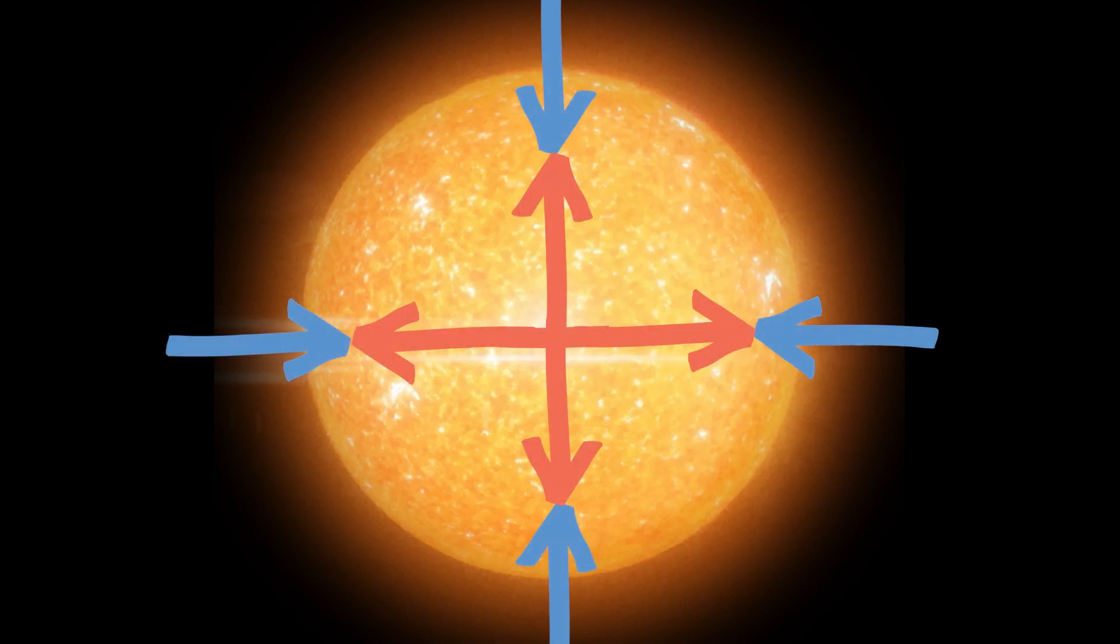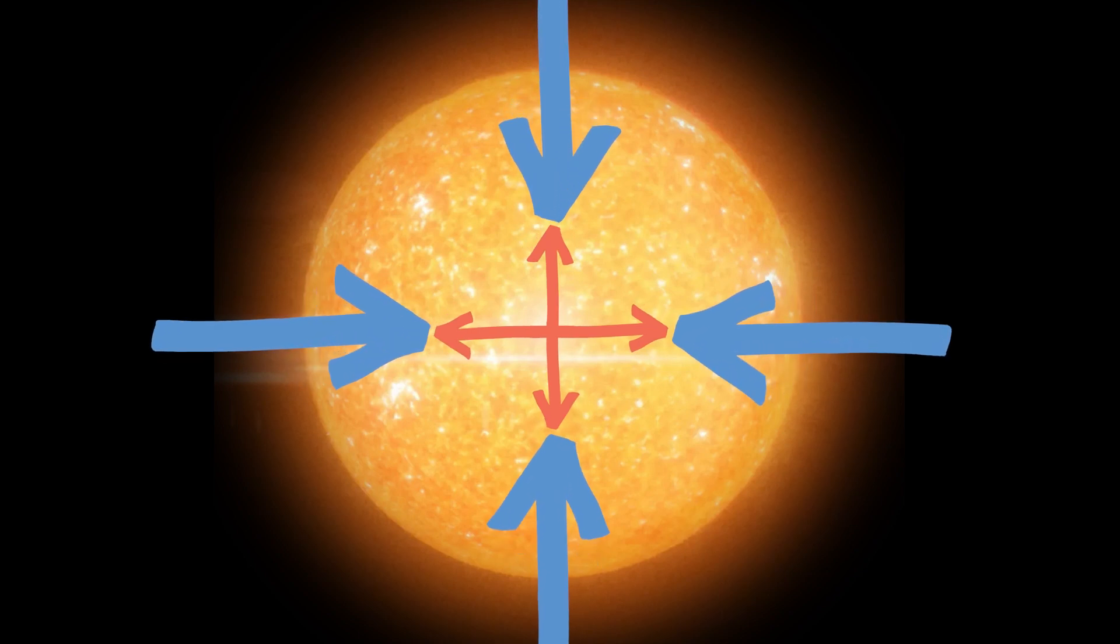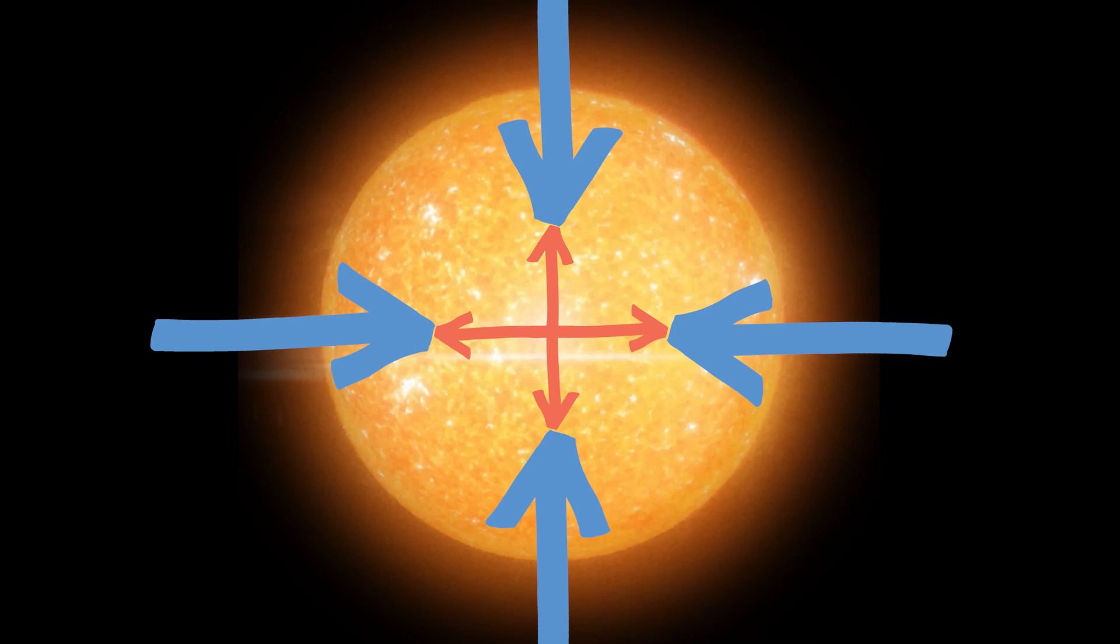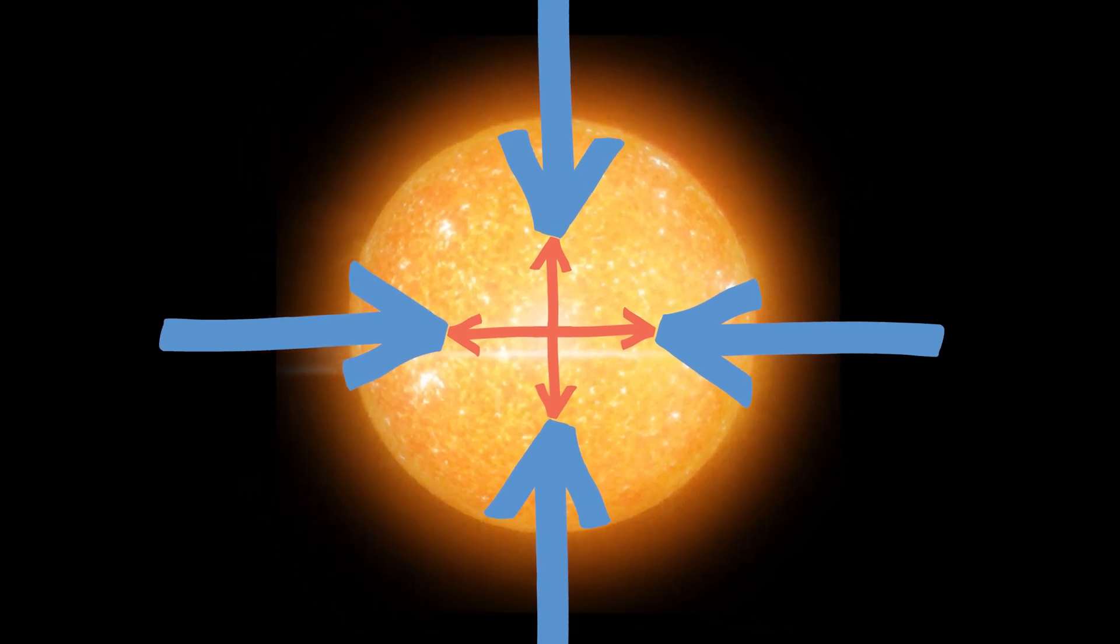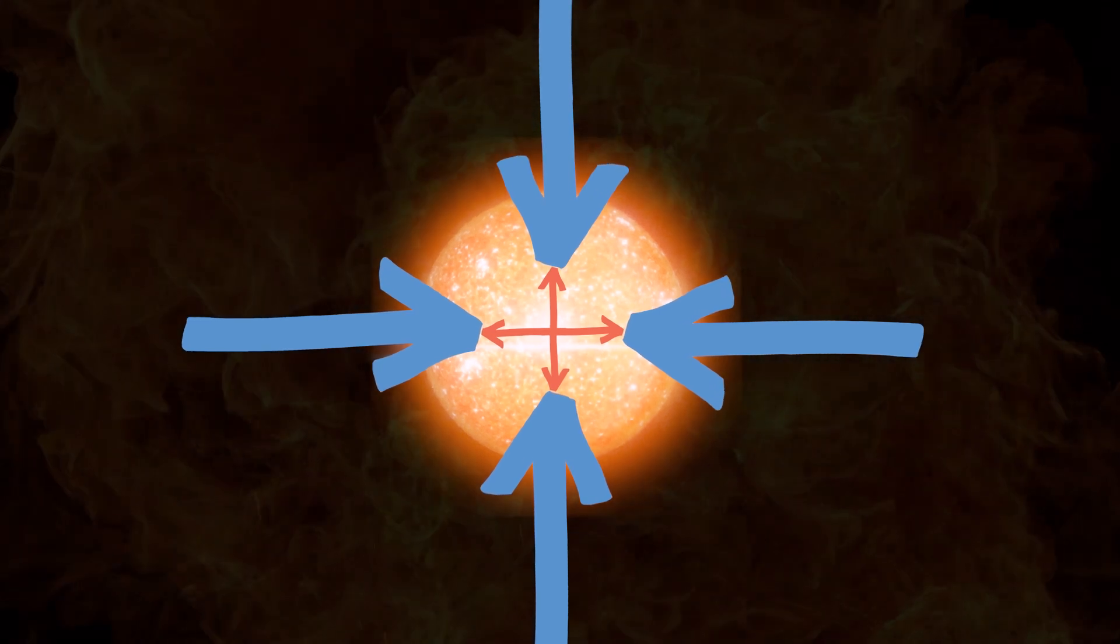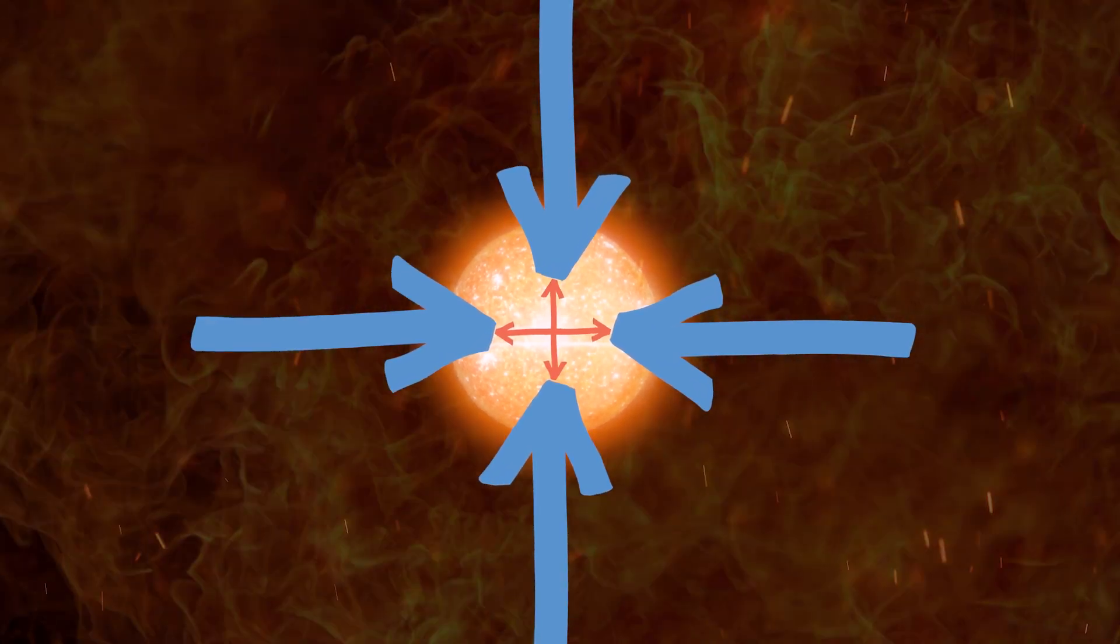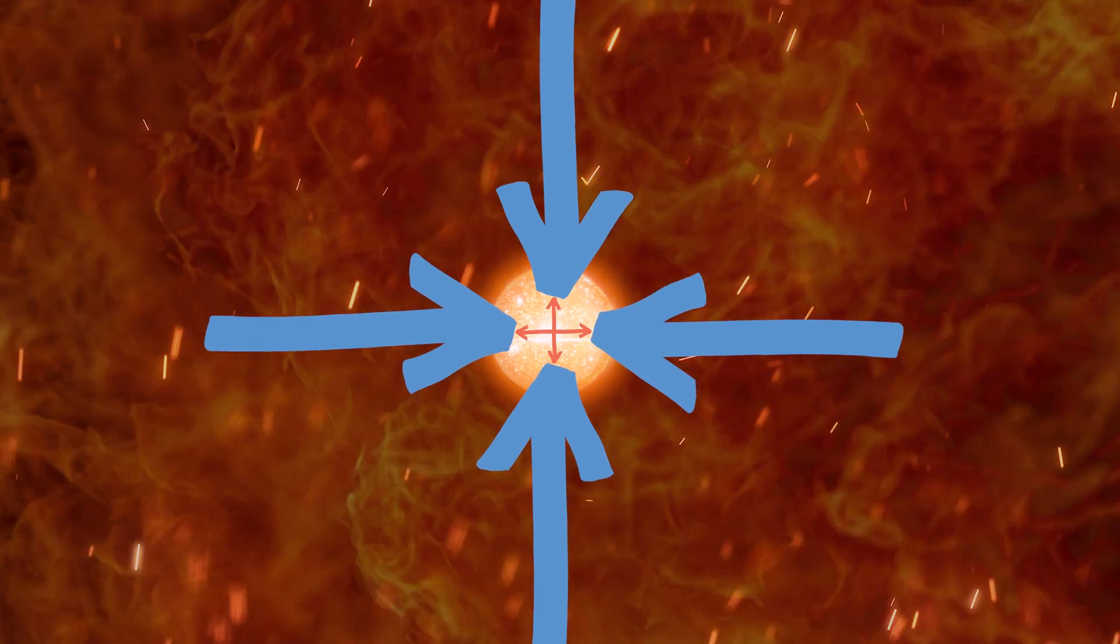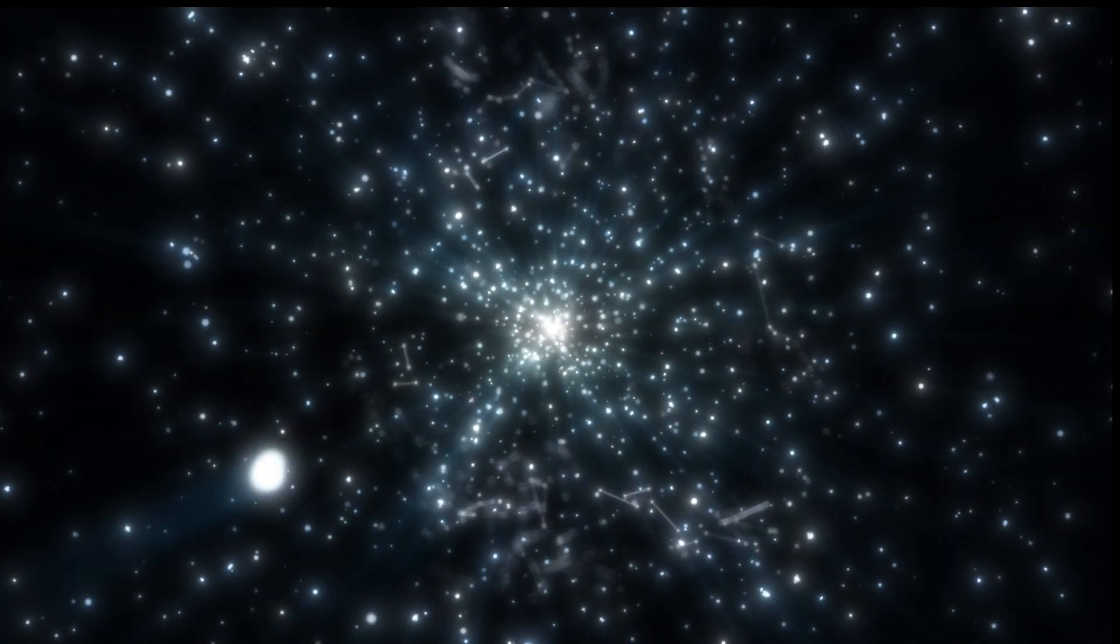But imagine what would happen if the push became unbalanced. Like imagine the push of heat out became weaker or the pull of gravity in became stronger. If that happened, all those gases would get pulled further and further into the center. They get hotter and hotter and hotter. And sometimes when this happens, everything smashes together and gets so hot that bang, the star explodes. And that's what a supernova is. A star exploding.